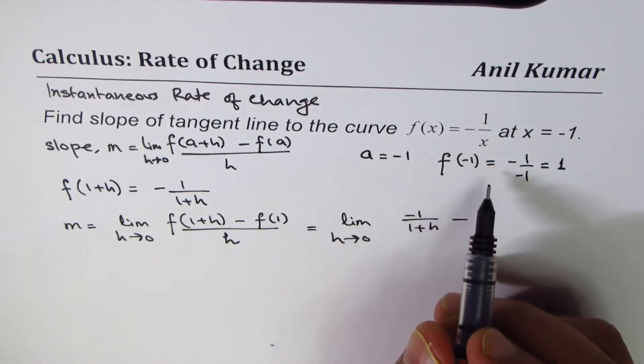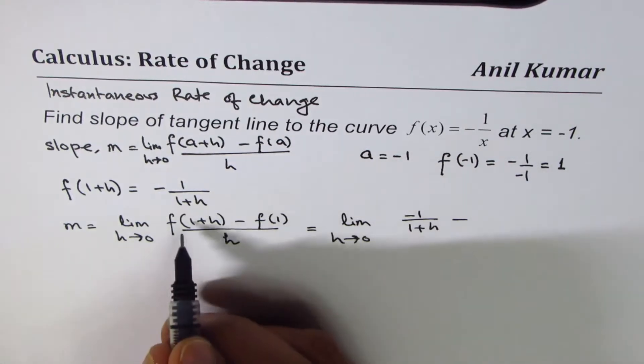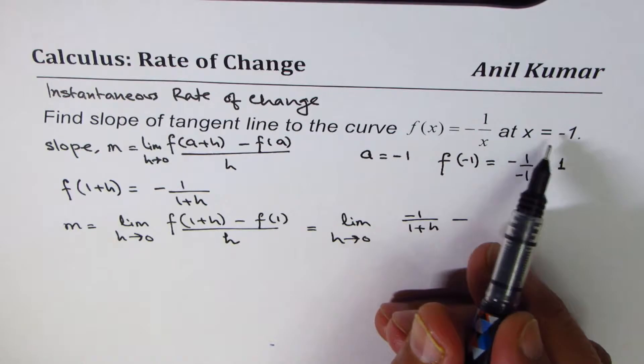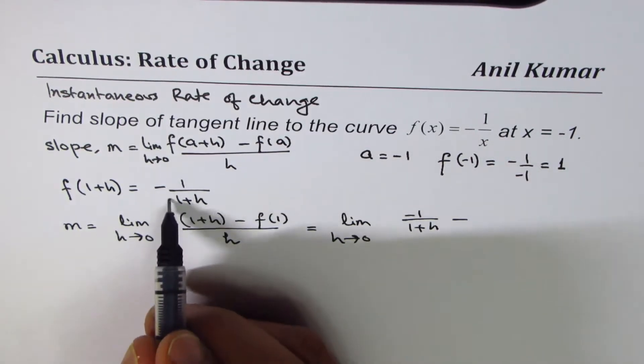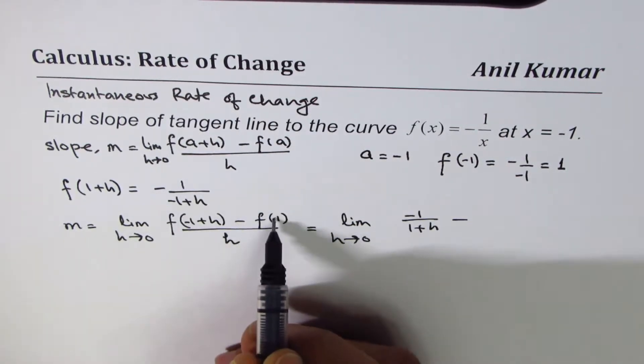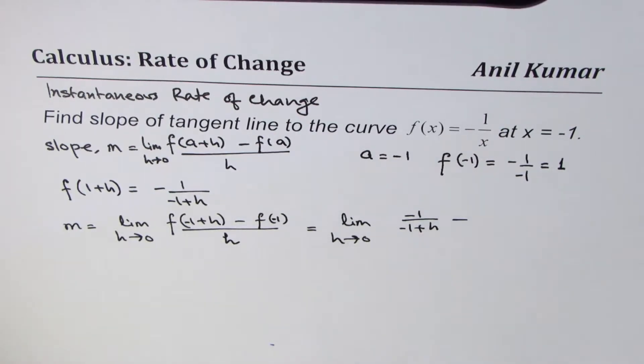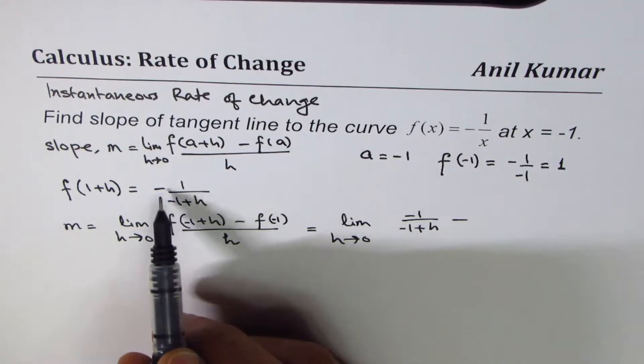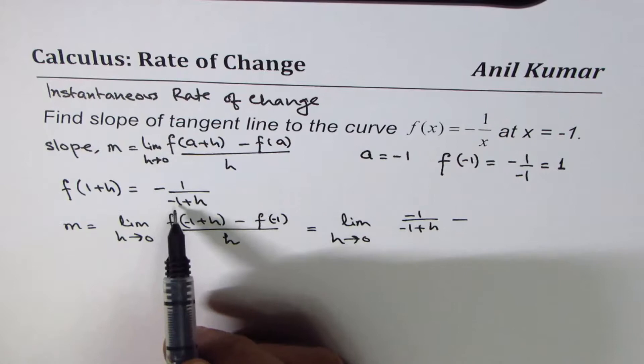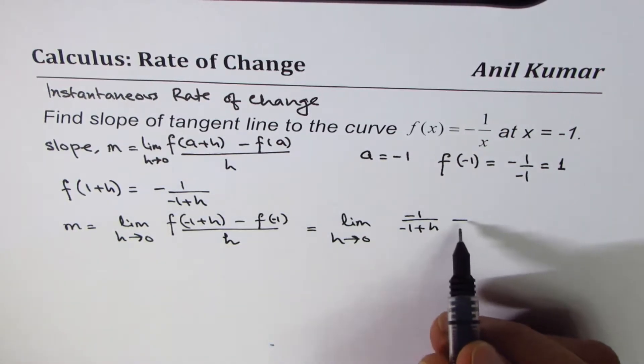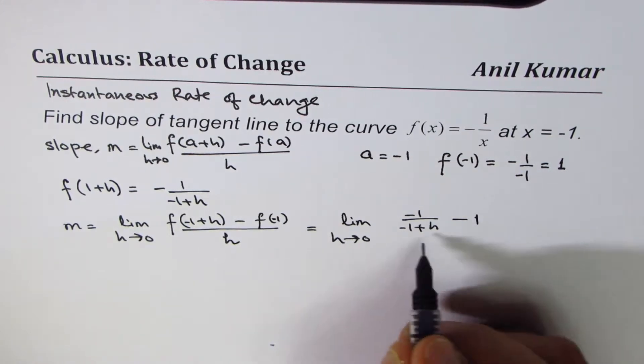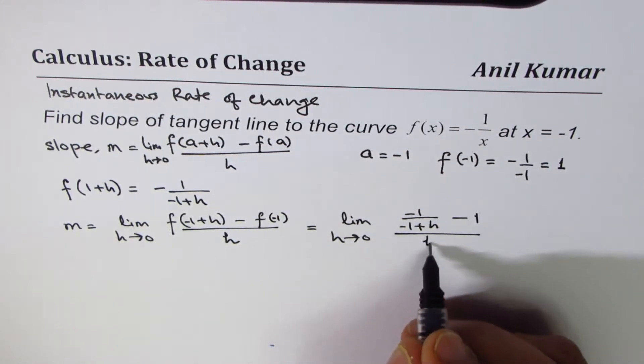is minus 1 over -1+h. Minus f of, sorry, the point is minus 1. Okay, so the point is x equals to minus 1. So I'll have to replace this with minus 1. This is minus 1. This is also minus 1. Now, so f(-1+h) will be minus 1 over -1+h, minus f(-1) is 1 for us, we'll write 1 here, divided by h.